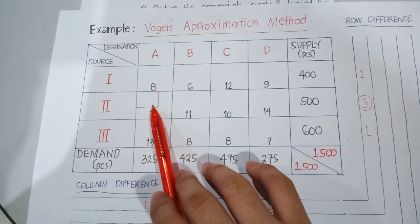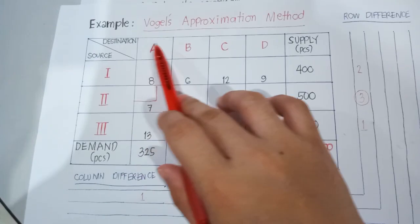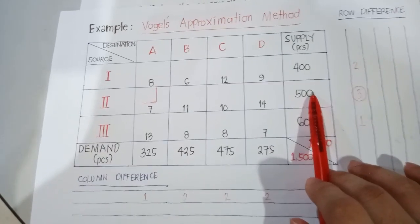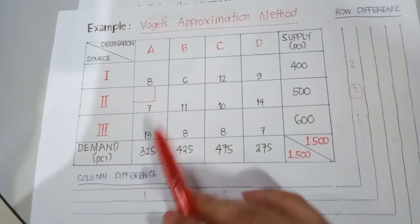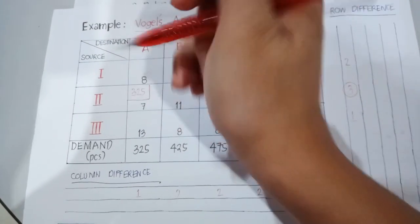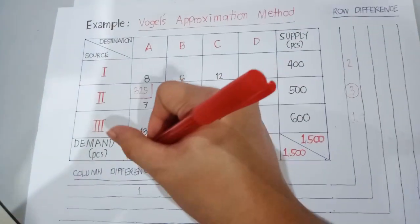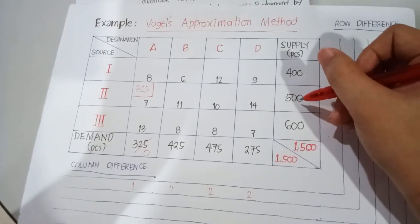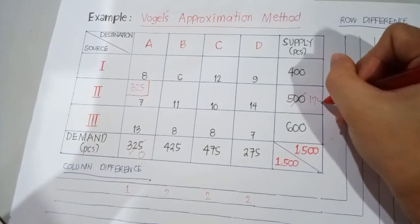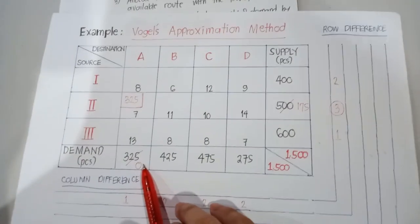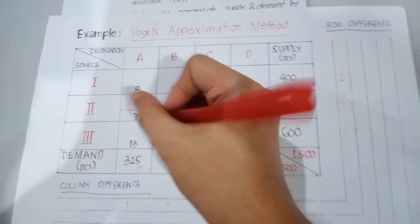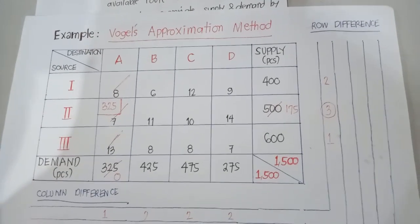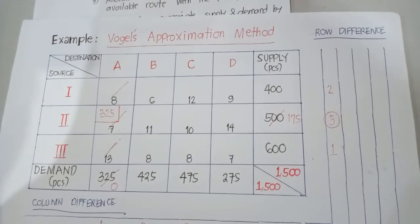We match the quantity of demand versus supply for source two to destination A. The demand is 325 and the supply is 500. Since 325 is the least value, we allocate 325. So 325 minus 325 becomes 0, and 500 minus 325 becomes 175. Since destination A's demand has been satisfied and exhausted, we cancel the entire column A — it will no longer be used.